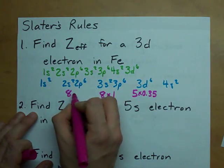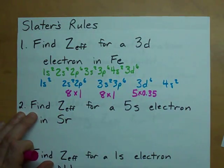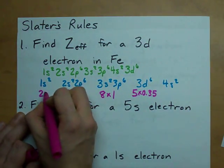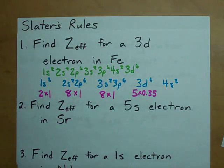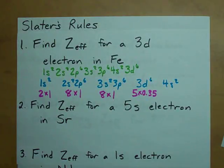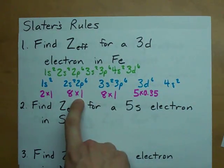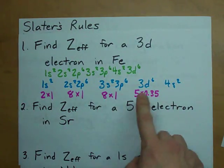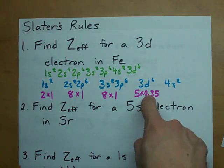And we deduct 1 for every electron in any other lower group. So there's 8 here. So we're going to subtract 1 eight times. Here, there's 8 electrons. Subtract it 8 times. There's 2 electrons here. Subtract it 8 times. Add all of these together.